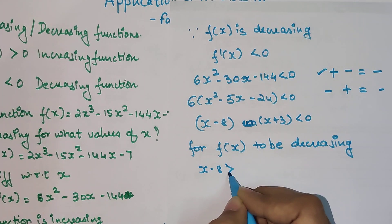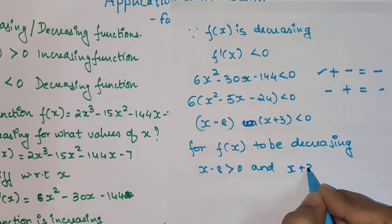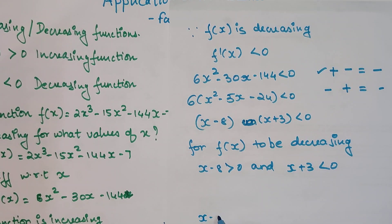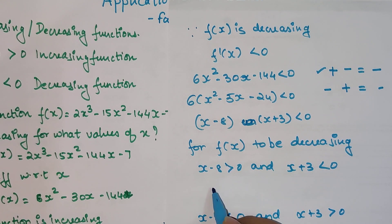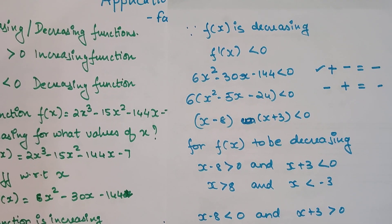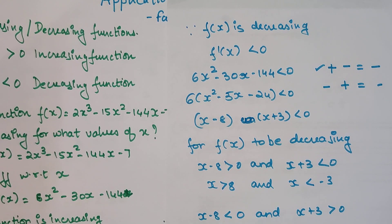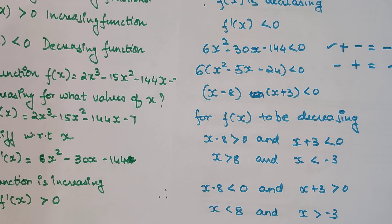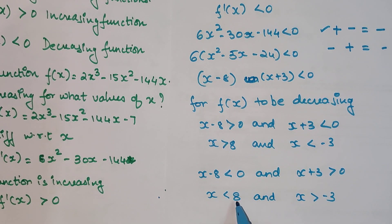The next scenario is: x - 8 < 0 and x + 3 > 0. From the first scenario, x > 8 and x < -3. From the second scenario, x < 8 and x > -3.